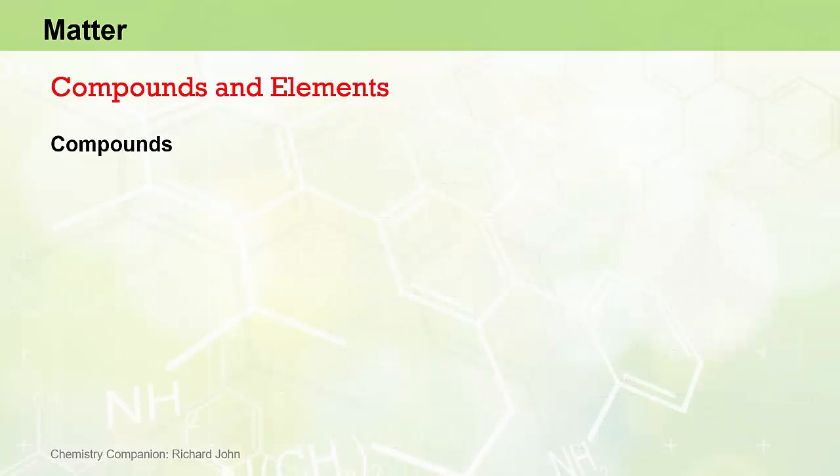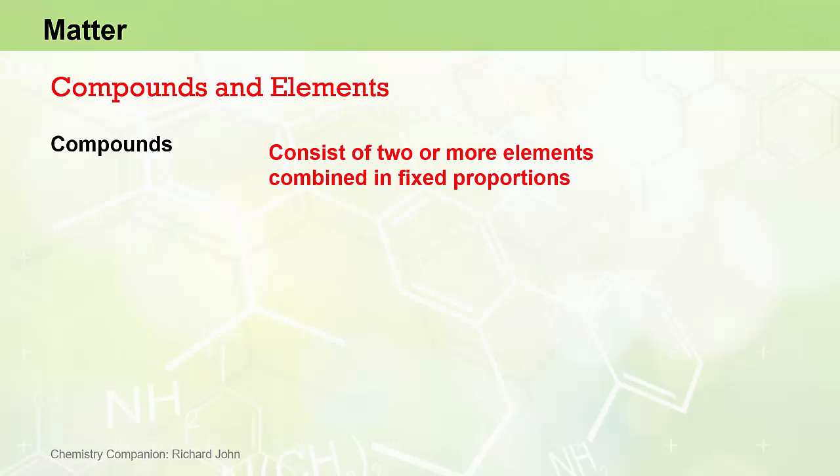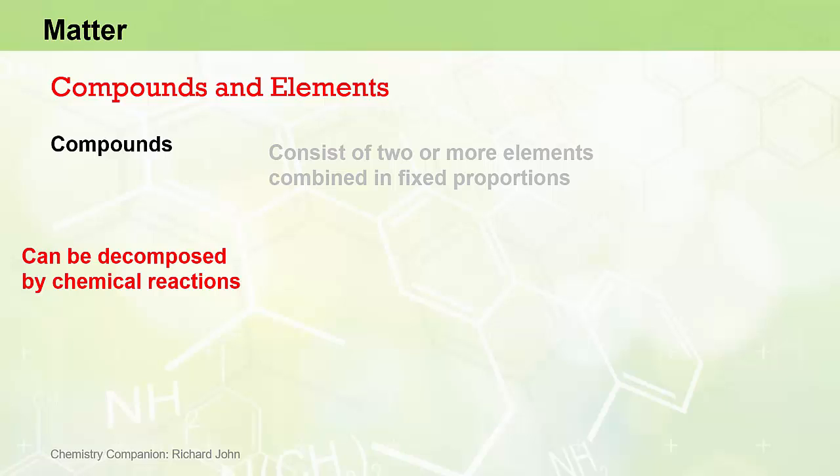We'll now turn our attention to the second type of substance, compounds. As we have already noted, compounds are formed by two or more elements in which the elements are always combined in the same fixed proportions by mass. As such, the composition of a compound does not vary even though they are made up of different elements. Being a substance, they cannot be broken down into their constituent elements by simple physical processes, but they can be broken down by chemical reactions to form other substances.